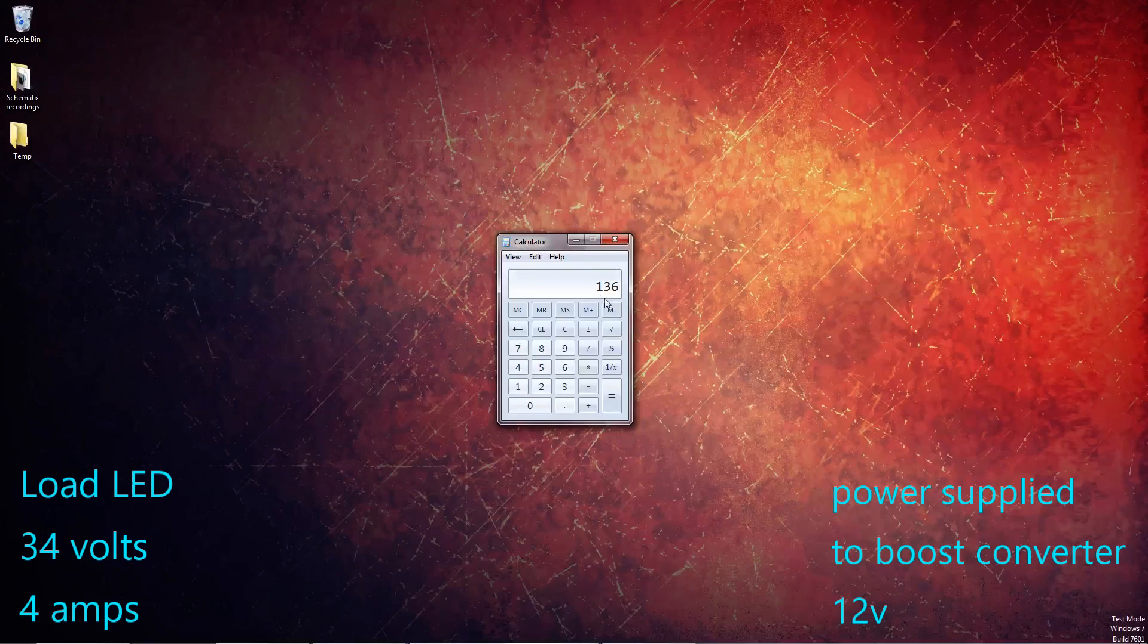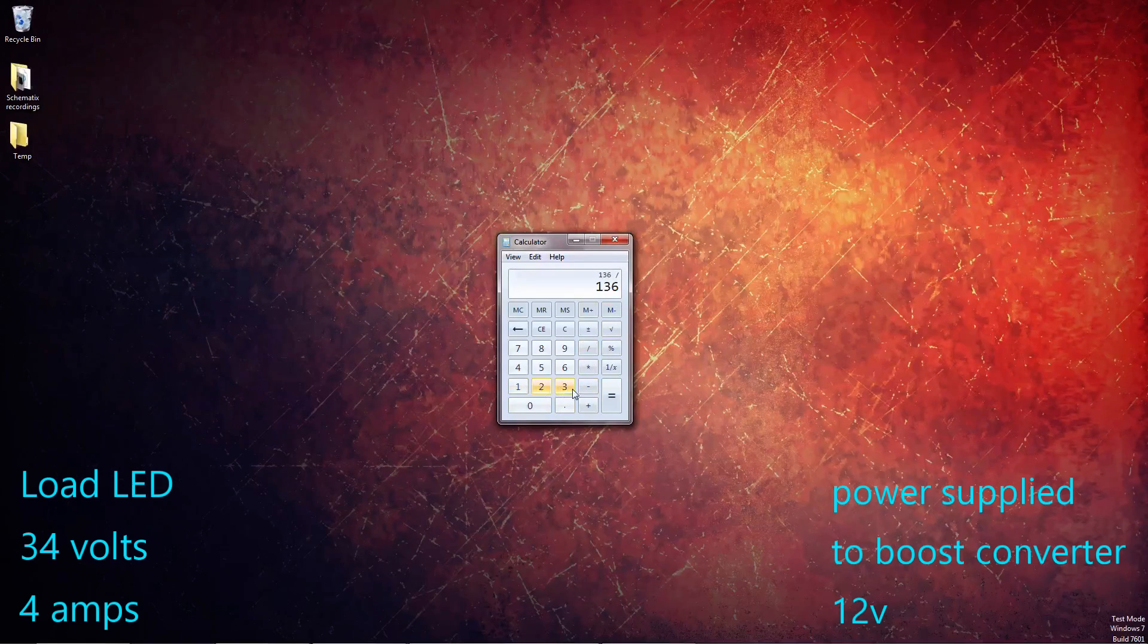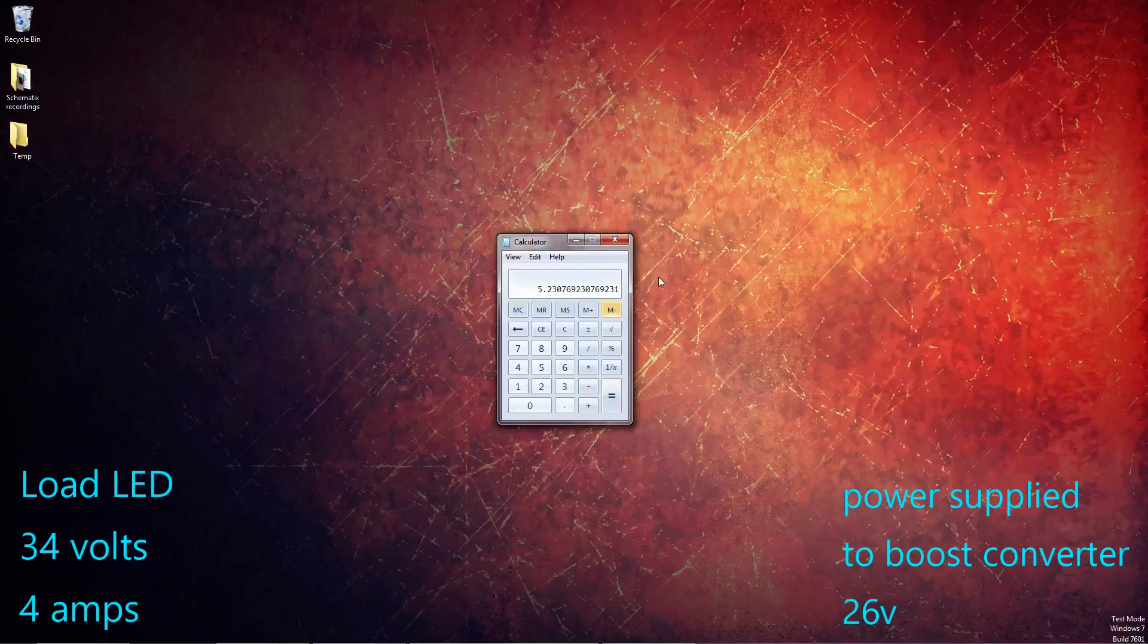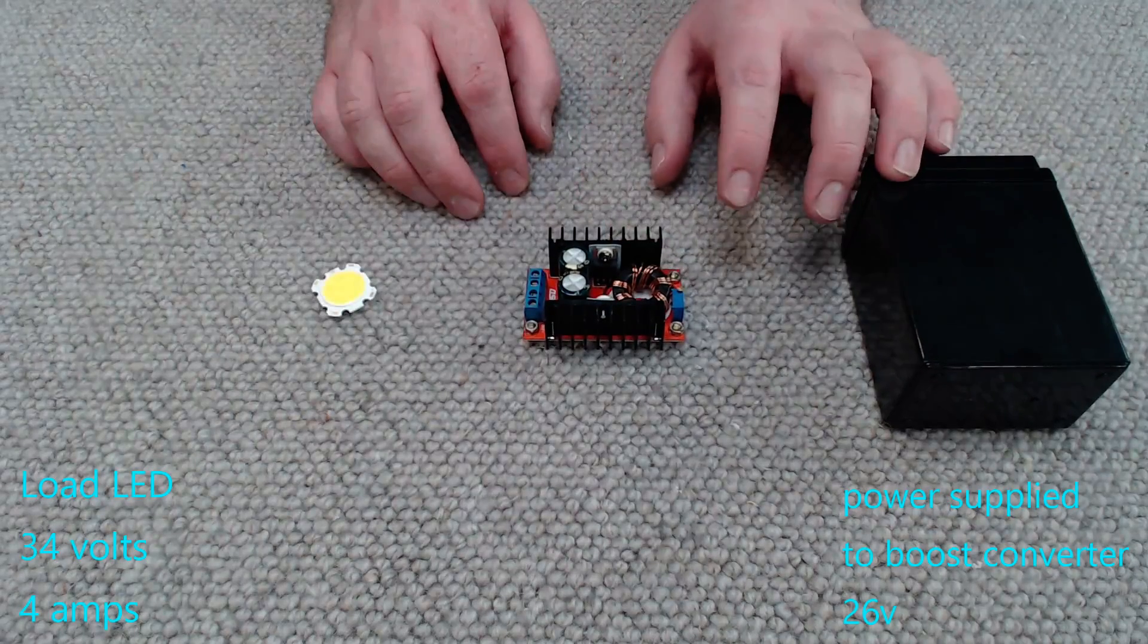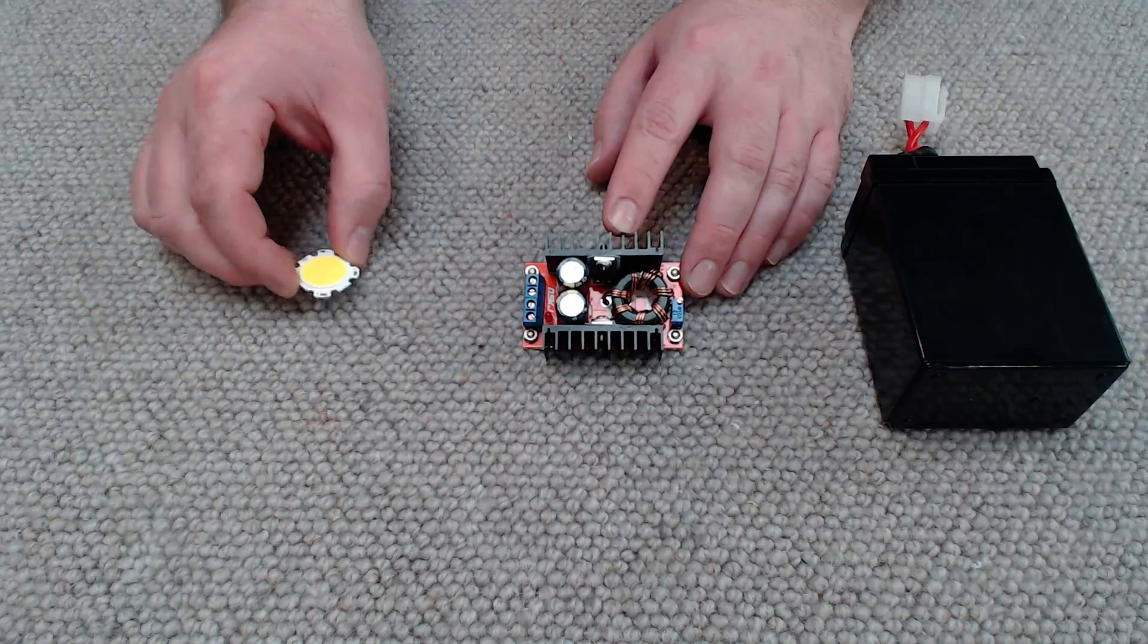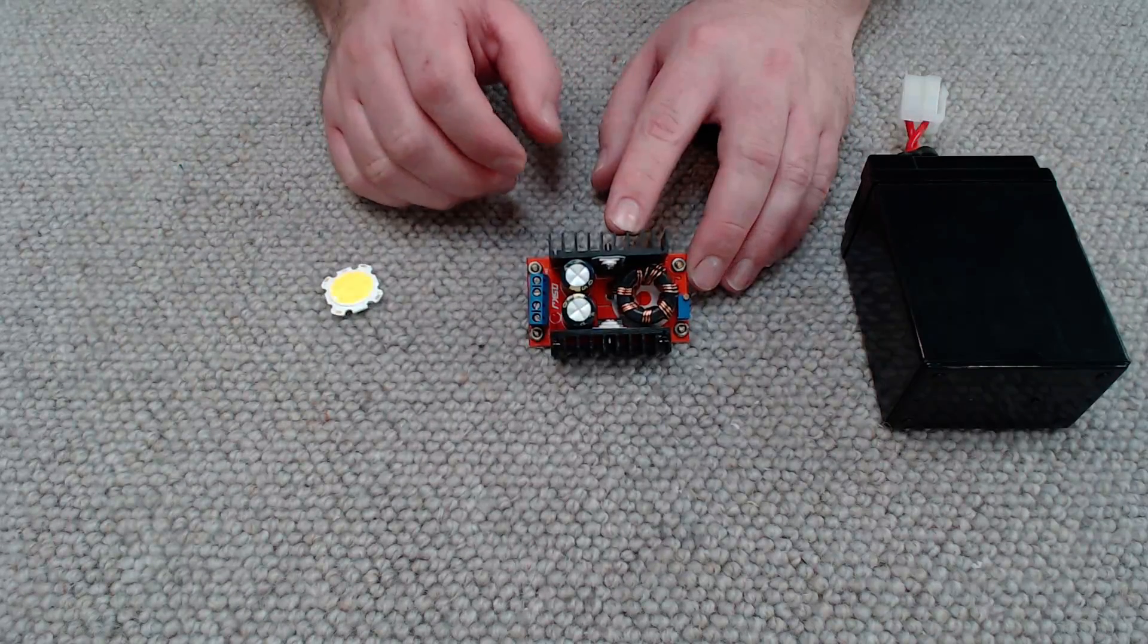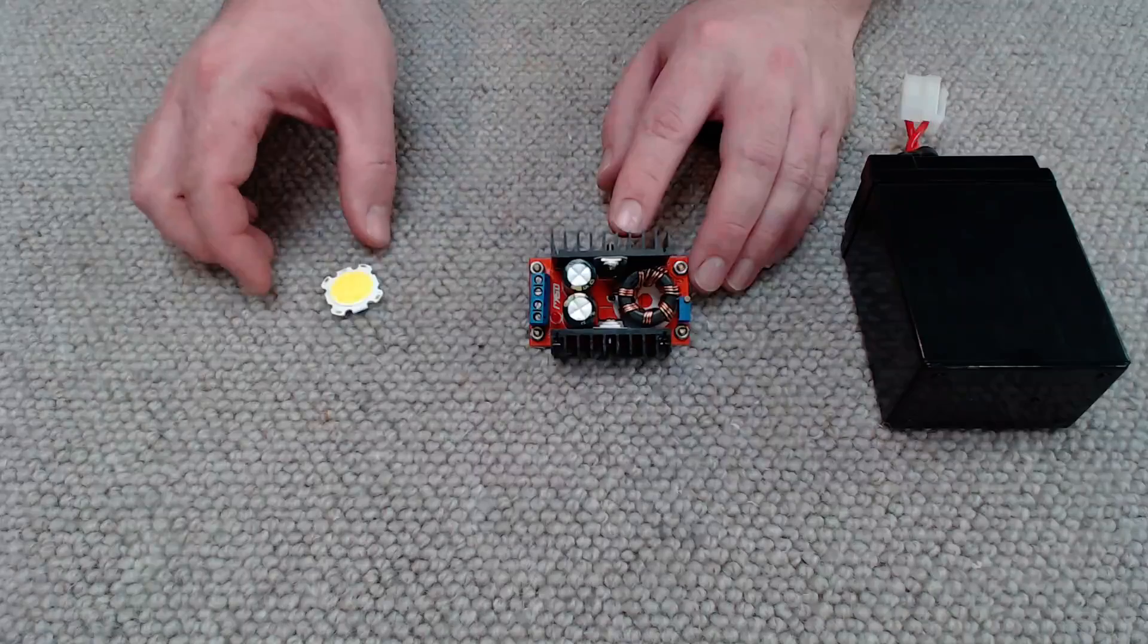Well you could buy a bigger and beefier step up or boost converter to handle this job. However if we had a higher voltage power supply so that this unit is not having to increase the voltage from such a low voltage to such a high voltage then we're going to draw less current. So now let's change things up. As before our load is the LED which is going to consume 136 watts of power. But let's say our power source supplying the boost converter was now 26 volts. Hit equals and we get 5.2 amps of current being consumed by our boost converter. So just by changing the power supply voltage to 26 volts now means that we're not going to exceed the 6 amp maximum input rating.